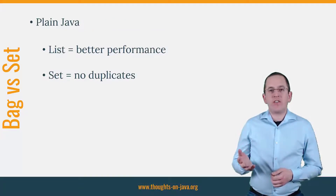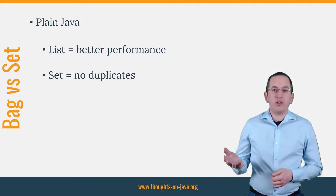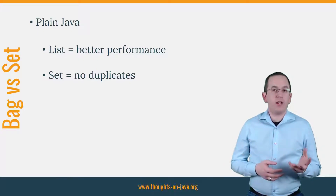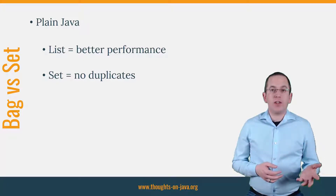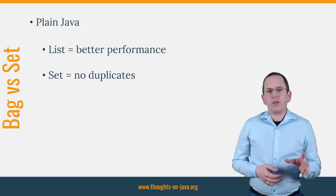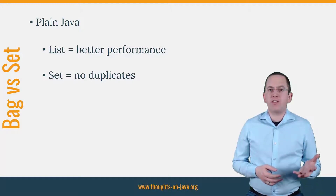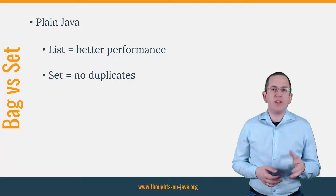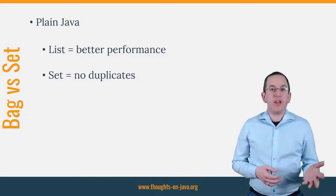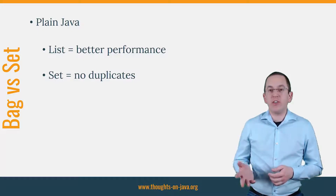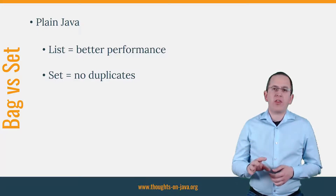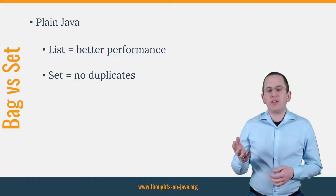When you just look at the Java types, the answer seems easy. In general, a java.util list provides better performance while a java.util set doesn't contain any duplicates. As long as you implement the create use case correctly, a java.util list seems like the obvious best choice for your association mappings. But it's not that easy. A list might be more efficient than a set, but the type also influences how Hibernate manages the association in the database. So there are a few other things you need to take into account when you make your decision.